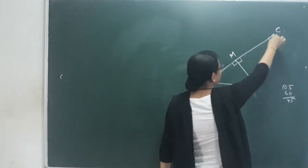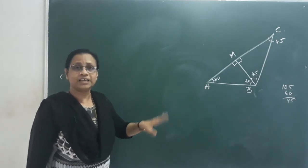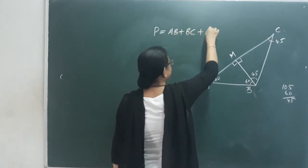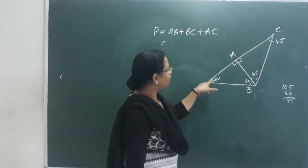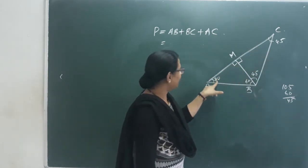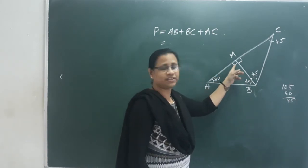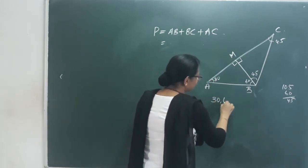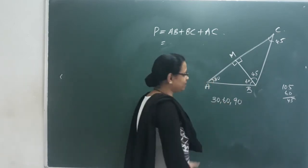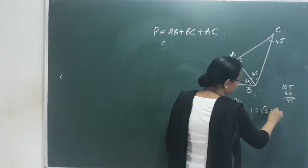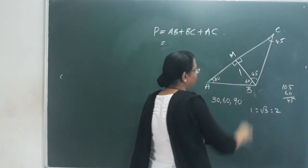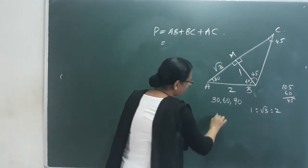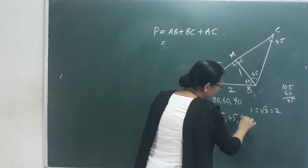We call this triangle ABC, and its perimeter equals AB plus BC plus AC. For the 30-60-90 right triangle, the side ratio is 1 : √3 : 2. So the side opposite 30° is 1, opposite 60° is √3, and opposite 90° is 2.